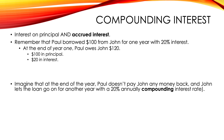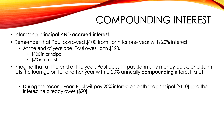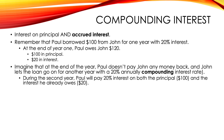Now imagine that at the end of the year, Paul doesn't pay John any money back and John lets the loan go on for another year, this time with a 20% annually compounding interest rate. During the second year, Paul has to pay 20% interest not just on the principal — that original $100 — but he now has to pay 20% interest on the interest he already owes, which at this point is $20. That accrued interest was $20. So now he's paying interest on the principal and paying interest on interest.